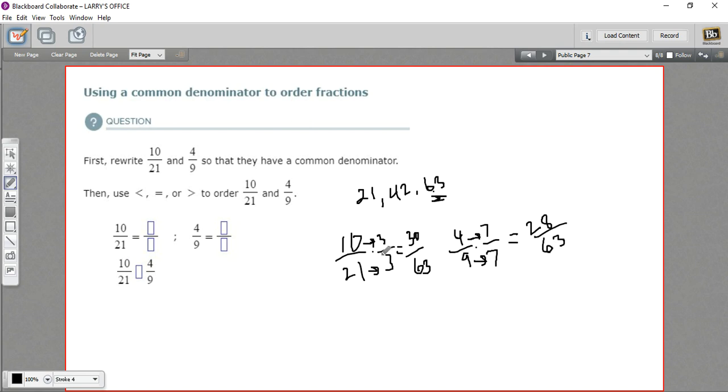So you can see 10 over 21 is a little bit bigger, just a smidge bigger. It's 30 63rds versus 28 63rds.